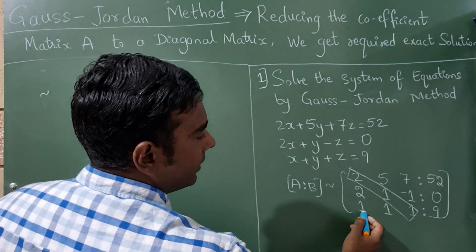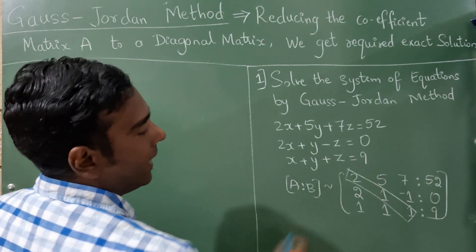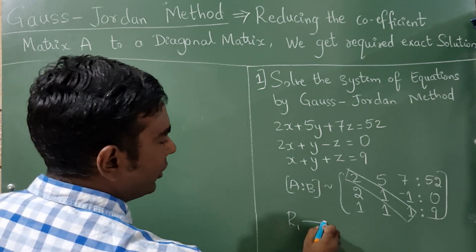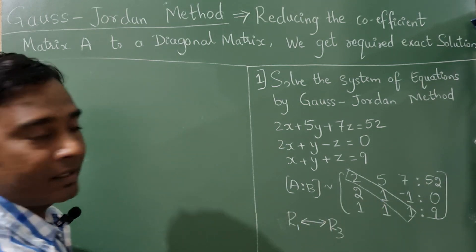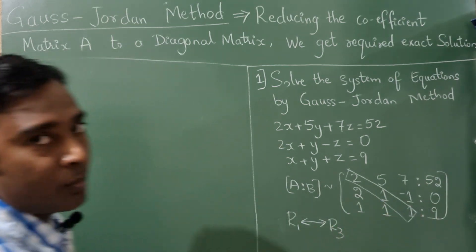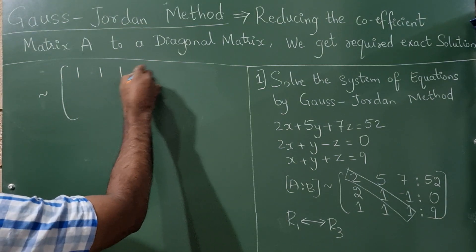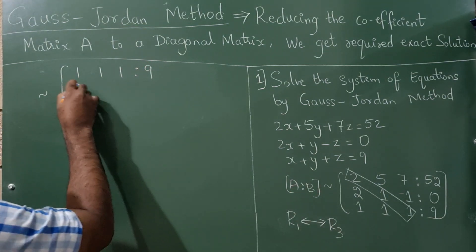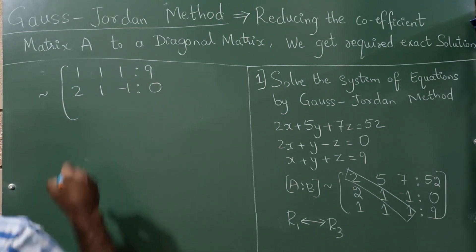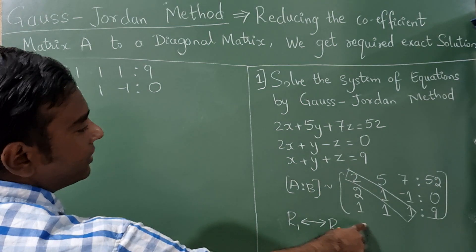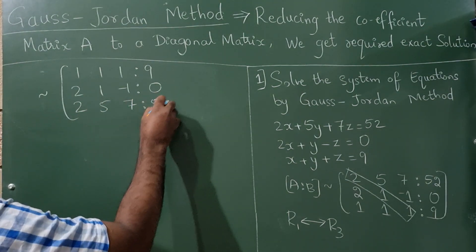Here you can see that R3 has elements smaller than R1. So I am going to interchange R1 with R3 because the elements are smaller. So I will write here: R1 becomes 1, 1, 1, 9; R2 stays the same; and R1 is shifted to R3 as 2, 5, 7, and 52.